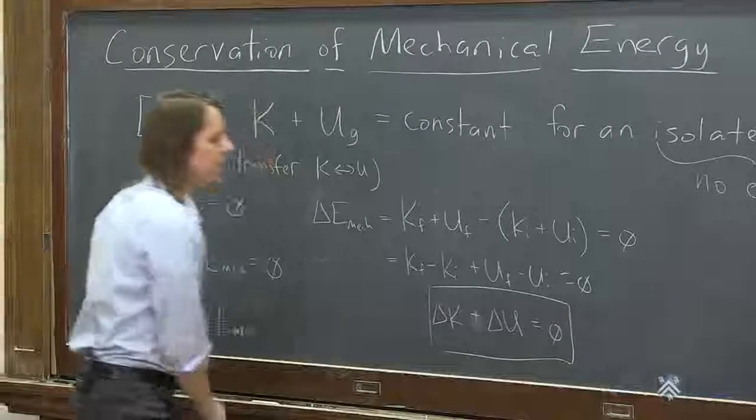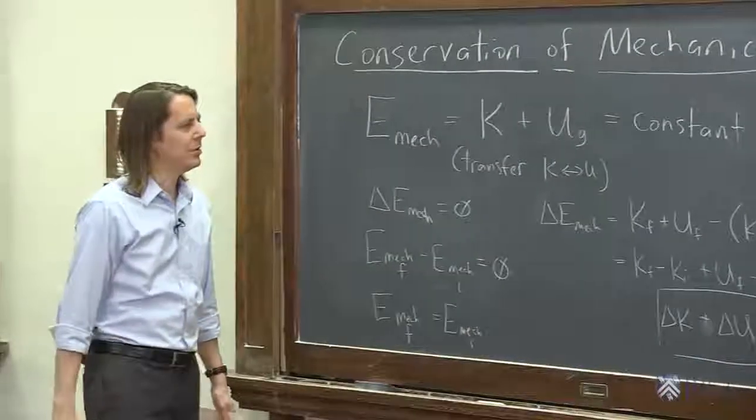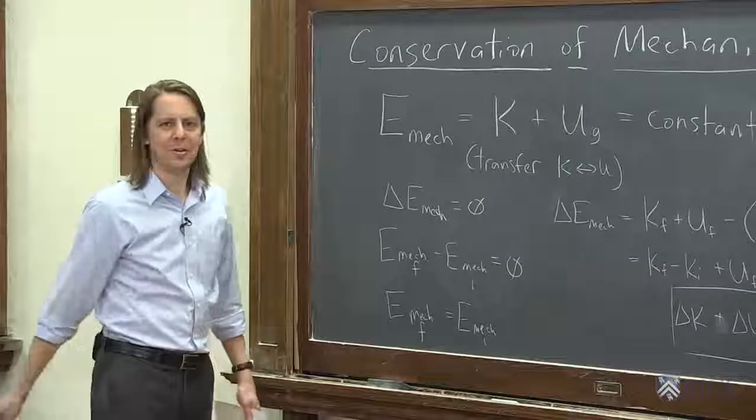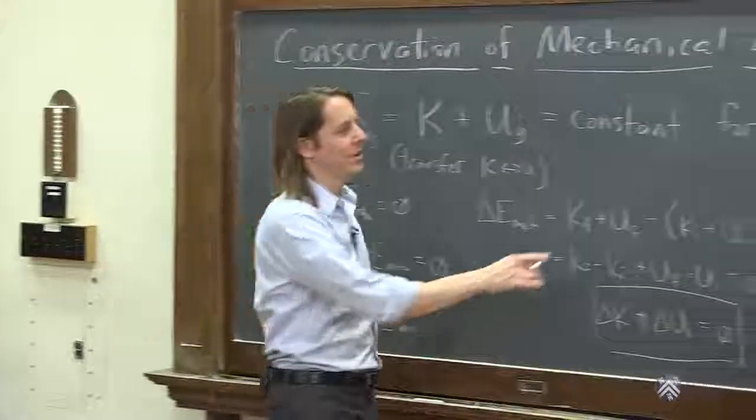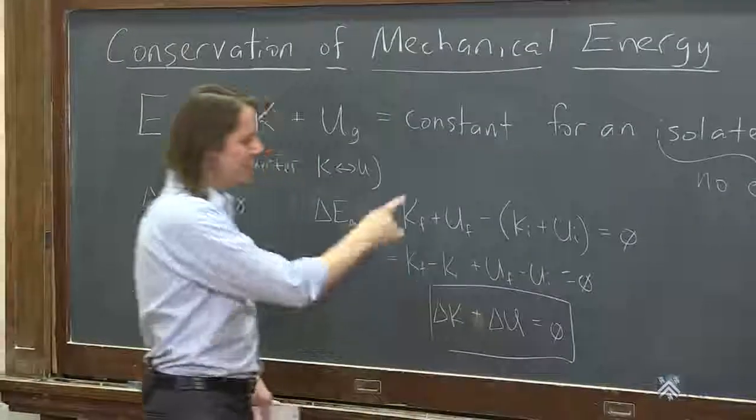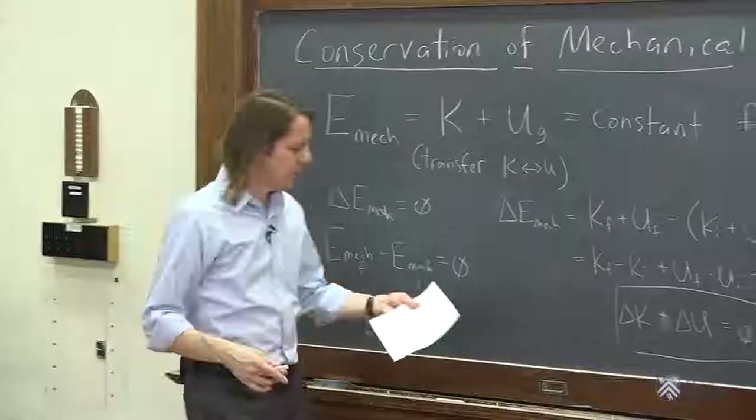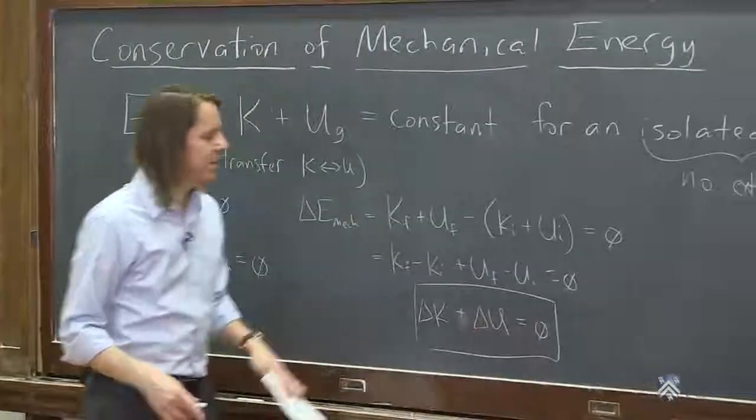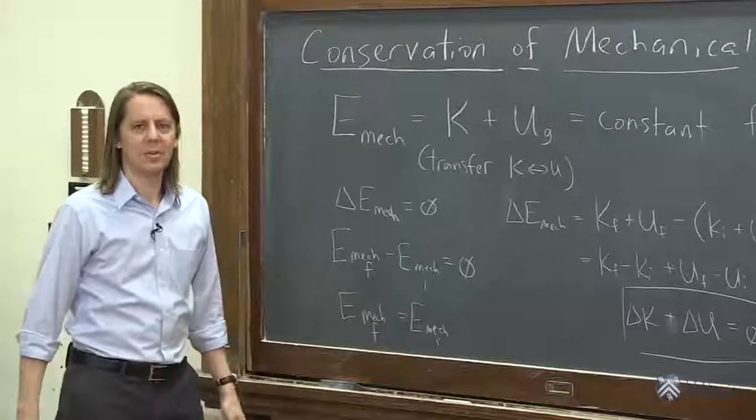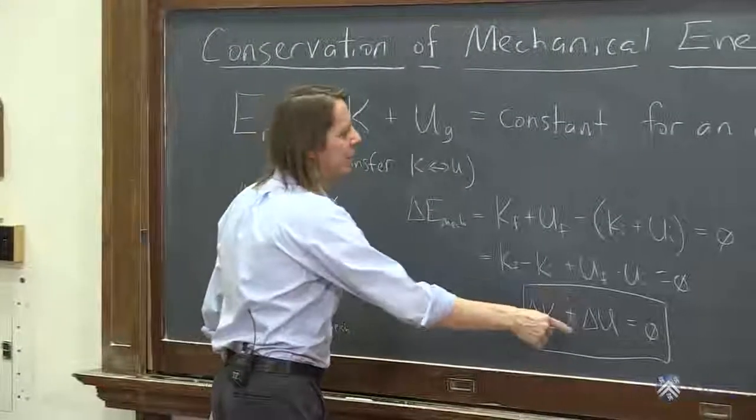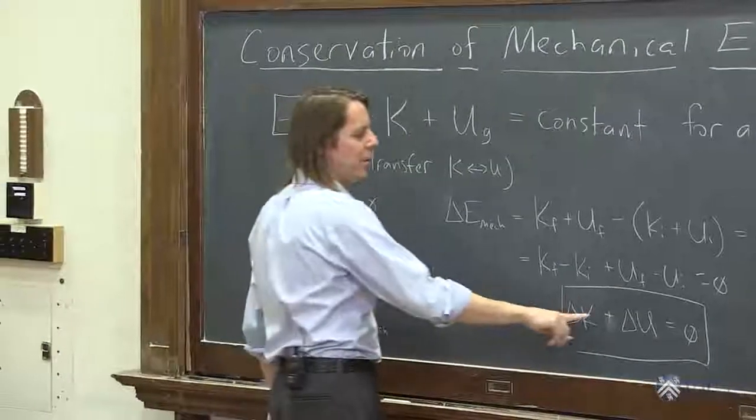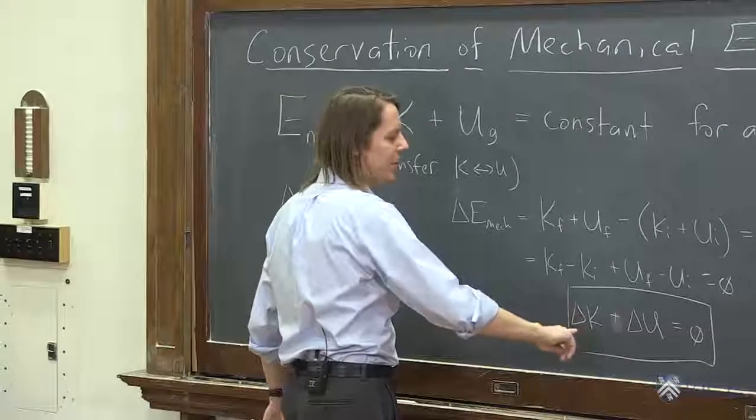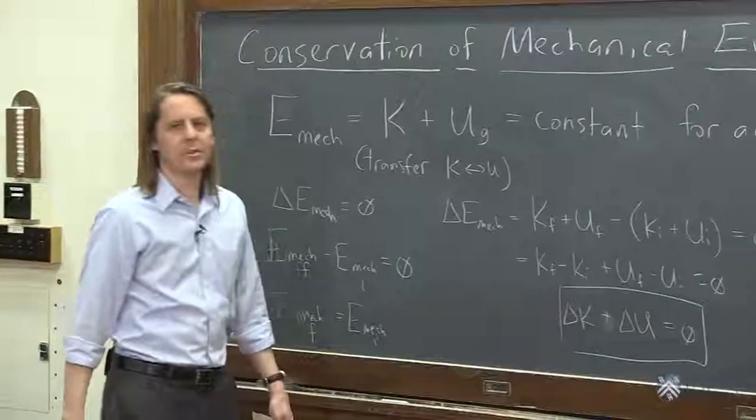So this is another way you'll see this statement written quite a bit. These are all saying the exact same thing, is that if nothing comes in and does external work, then this total energy will be the same. So you can think of it as the total energy. You can think of it as the small changes between the kinetic and the potential. You can also see this one is how we have this transfer. Maybe this goes up and this goes down. Then we transferred some of our kinetic energy into potential energy.